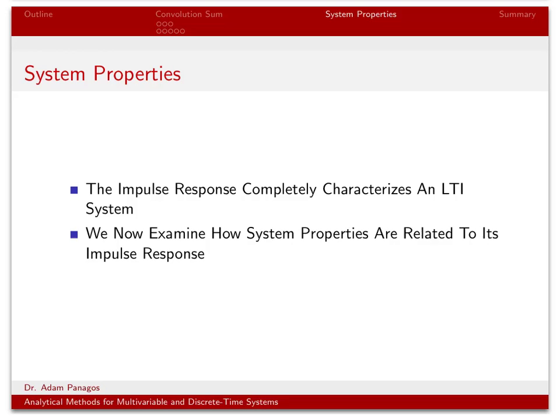The impulse response of a discrete time linear time invariant system completely characterizes the system. We've been doing examples where we've been computing the convolution of the impulse response with an input to yield the output. What we're going to do now is examine system properties and show how these system properties are related to the impulse response.